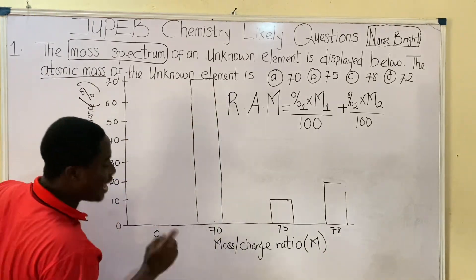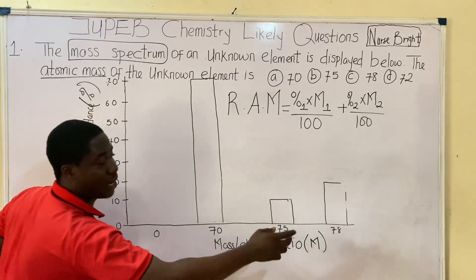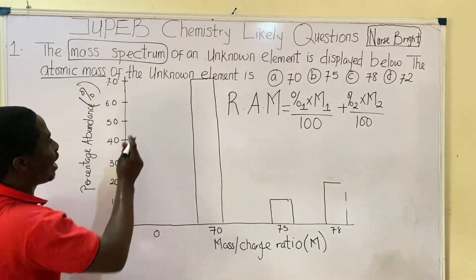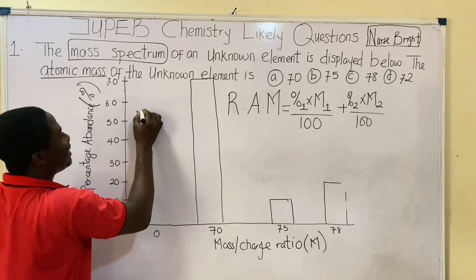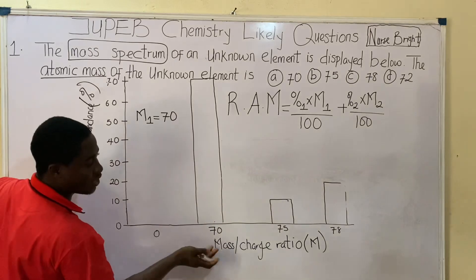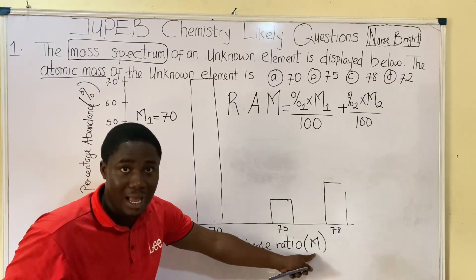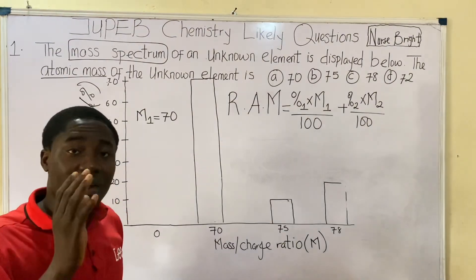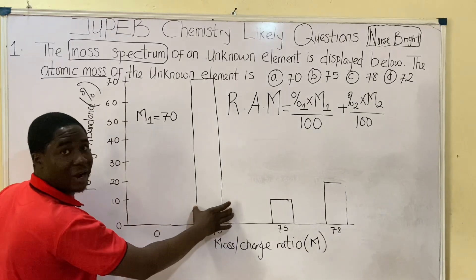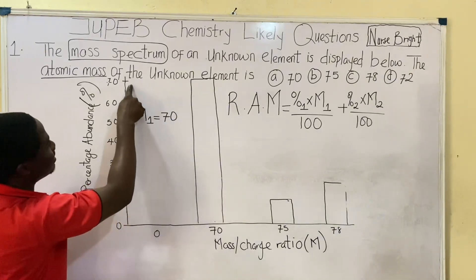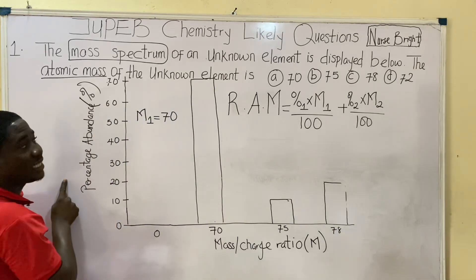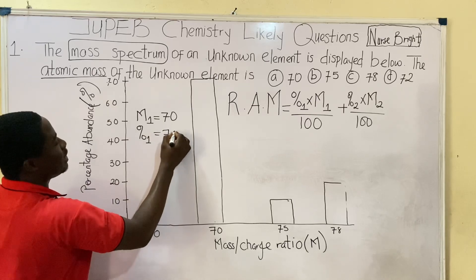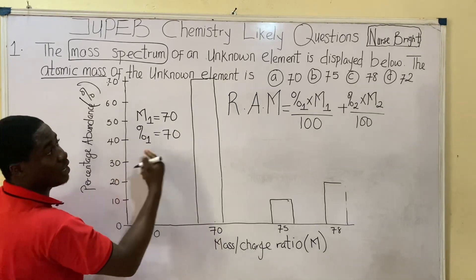Here is the first part of the graph. The mass-to-charge ratio, which we call the mass number, is 70. So M1 — the mass number of the first isotope — equals 70. This first bar on the illustration is in line with the 70 mark on the percentage abundance axis. So percentage 1 equals 70. We are done with M1 and percentage 1.